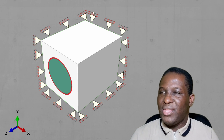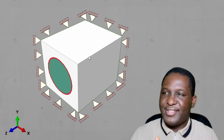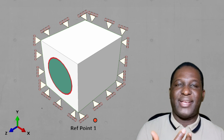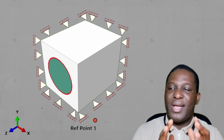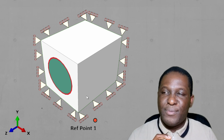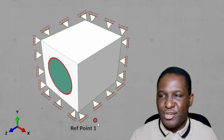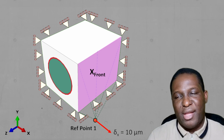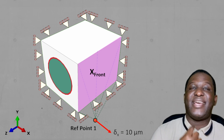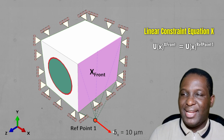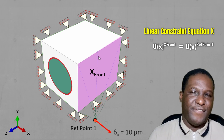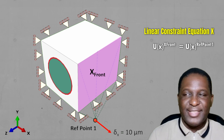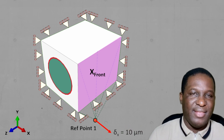You apply loading on all the edges, leaving three faces open. I'll use a reference point away from the specimen to later extract stress-strain data, then apply a 10 micron load in the x-axis at that reference point. The key is using a linear constraint equation that links this reference point to what's happening on that face, giving you the ability to extract stress-strain data at reference point 1. That's how you apply transverse loading in the x-direction.